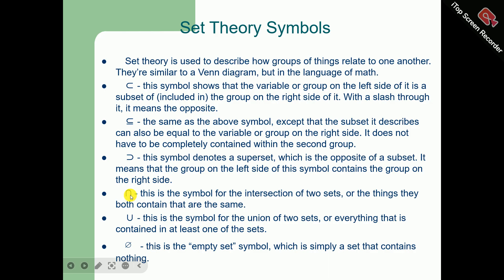This symbol is the intersection symbol and it is used in set theory as the intersection of two sets or things they both contain that are the same. This capital U is the symbol for the union of two sets, everything that is contained in at least one of the sets. Then we have this phi, which is used for empty set or null set in set theory. This is simply a set which contains nothing.